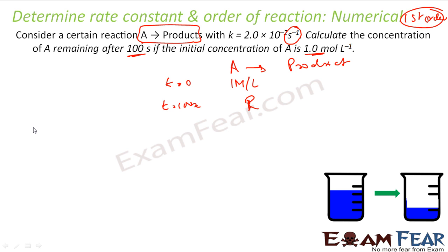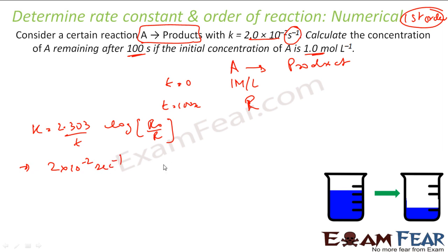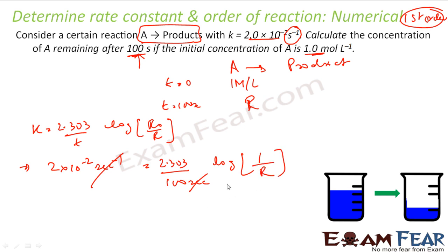Using the golden formula for first order: K = 2.303/T × log(R₀/R). Plugging in values: K = K×10⁻² per second, T = 100 seconds — note the units must cancel, so both must be in seconds. R₀ = 1 mol/L, final concentration = R. Solving this equation gives R = 0.135 moles per liter.